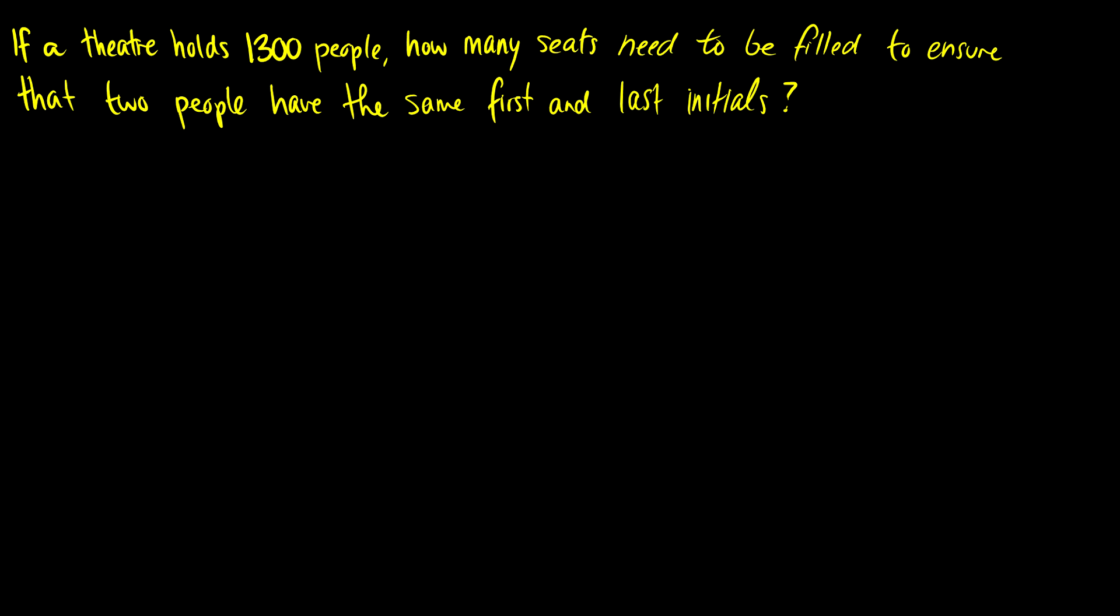In this video, we're going to do some problems with the pigeonhole principle, so let's get right into it. First question, if a theater holds 1,300 people, how many of those seats need to be filled to ensure that at least two people have the same first and last initials?